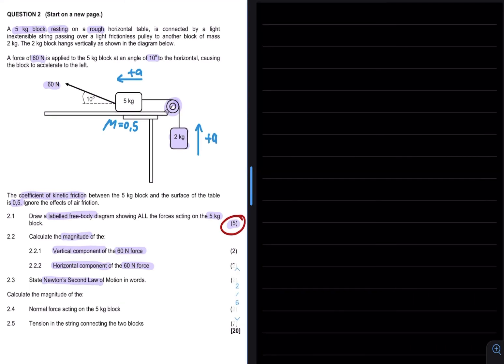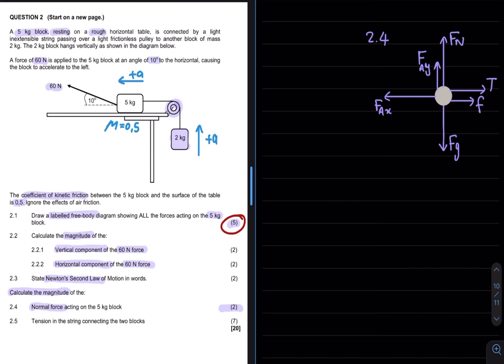Question 2.4 asks us to calculate the magnitude of the normal force acting on the 5kg block for a total of 2 marks. Now in order to solve the normal force we have to have a look at all the vectors working on my Y plane. Here I have both my normal force as well as my vertical component of my applied force working upwards and my Fg which is gravity working downward.